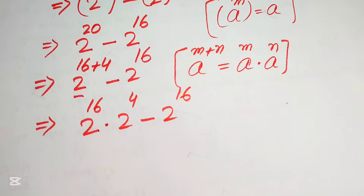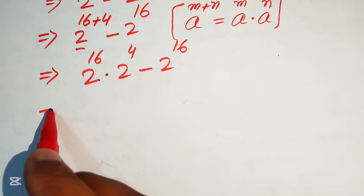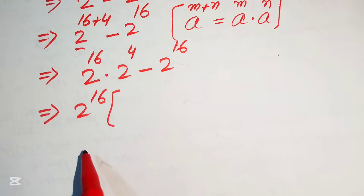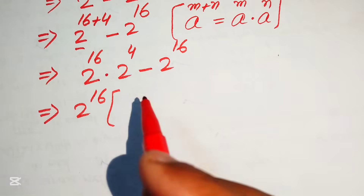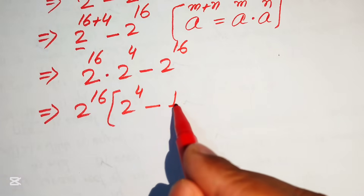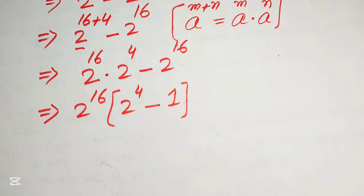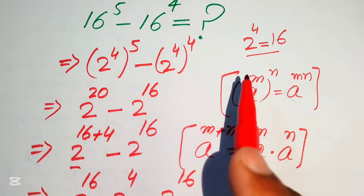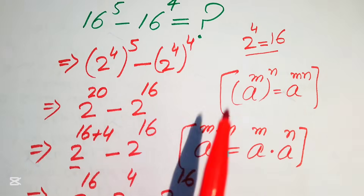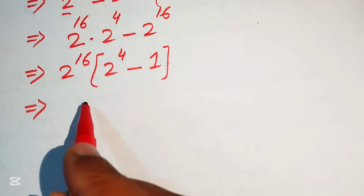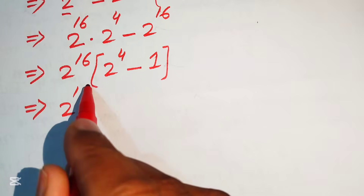Next we take 2 to the power of 16 as a common factor. When we factor it out, the remaining terms are 2 to the power of 4 minus 1. We then recall from the start that 2 to the power of 4 equals 16, so we replace 2^4 with 16.